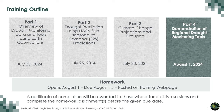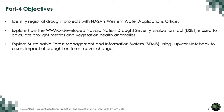In part one we had an overview of drought monitoring data and tools using earth observations. In part two we focused on drought prediction using NASA sub-seasonal to seasonal predictions, and in part three we focused on climate change projections and droughts. Today our focus is on demonstration of regional drought monitoring tools. Overall objectives for today are: identify regional drought projects with NASA's Western Water Applications Office or WAIO; explore how the WAIO-developed Navajo Nation Drought Severity Evaluation Tool or DSAT is used to calculate drought metrics and vegetation health anomalies; and explore the Sustainable Forest Management Information System or SFMIS using Jupyter Notebook to assess the impact of drought on forest cover change.